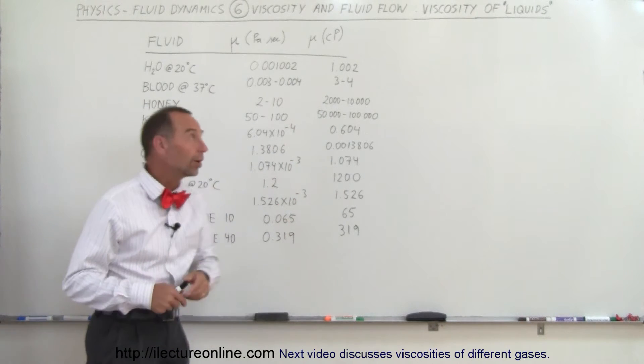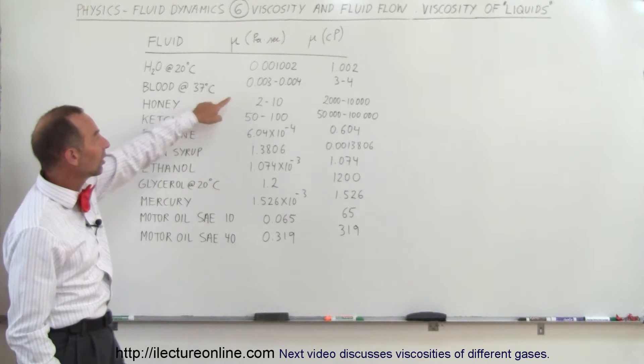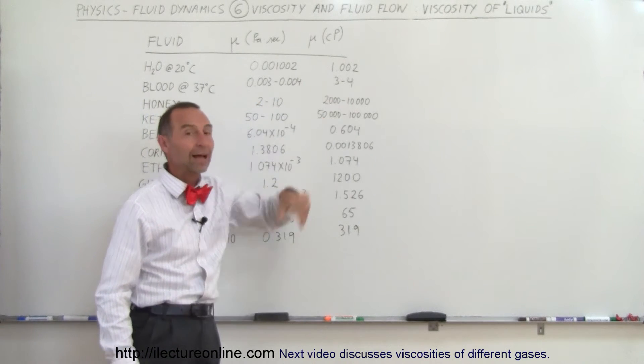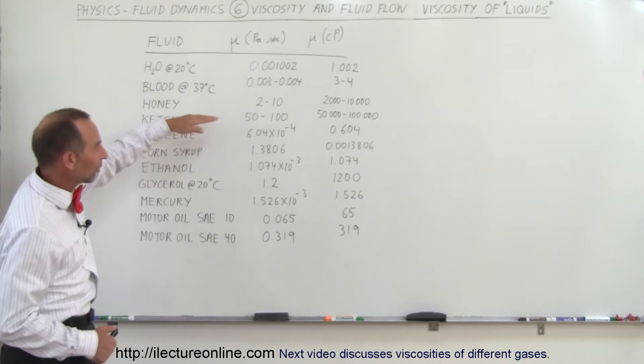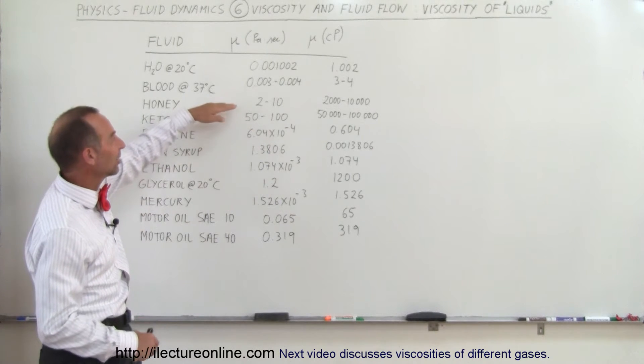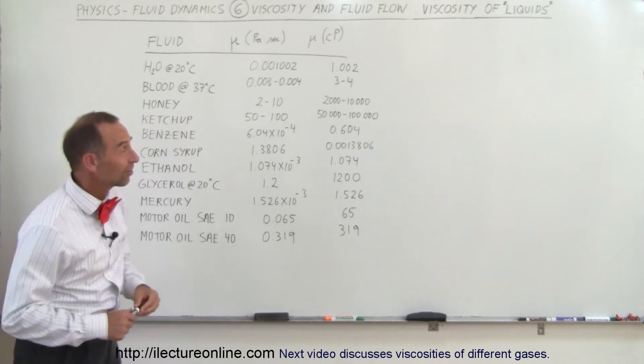For example, blood at 37 degrees Centigrade has a viscosity of about three to four times the viscosity of water. Honey, of course, everybody knows how slowly it flows when you try to get honey out of a pot. The viscosity is 2,000 to 10,000 times the viscosity of water.